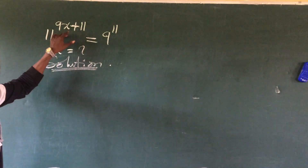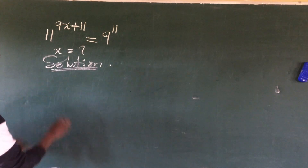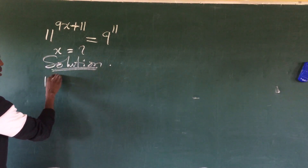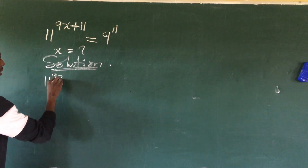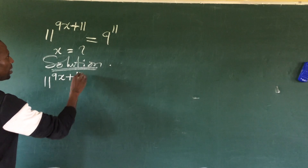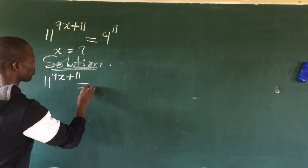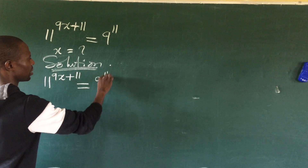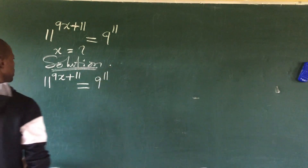We put down our question, which is 11 to the power of 9x plus 11, equal to 9 to the power of 11.